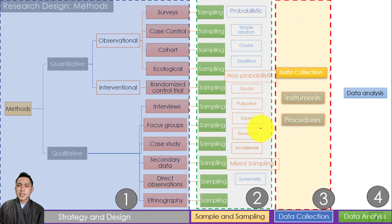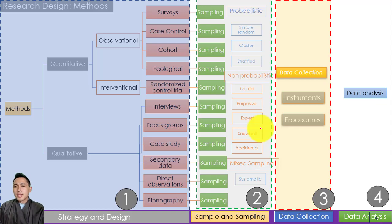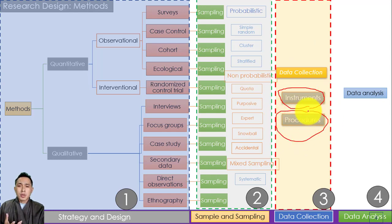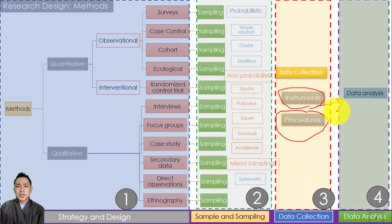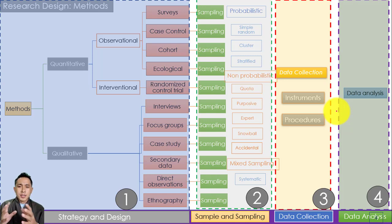Then comes data collection. If you have randomly selected around 300 people from 1000, that's 30% of the total population — how would you collect the data? What instruments are you going to use, and what procedures will you follow to collect data from those 300 samples? After that, how would you analyze and present the data? What tools will you use? It's all about data collection methods. The overview of research design is basically a bridge between research problem and results. It starts with strategy and design and ends with data analysis.